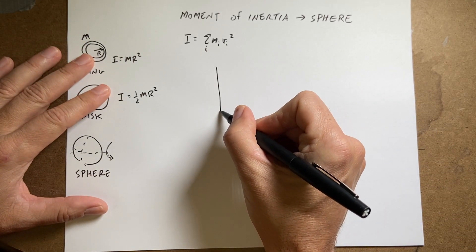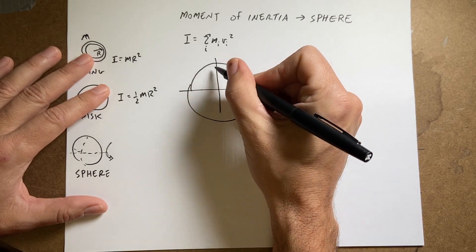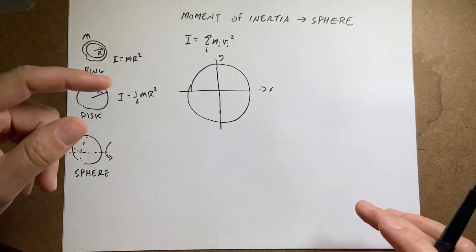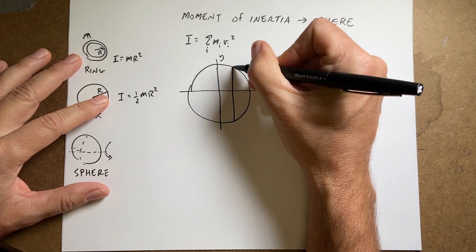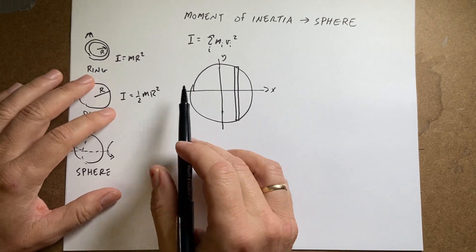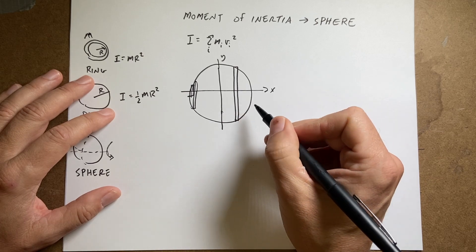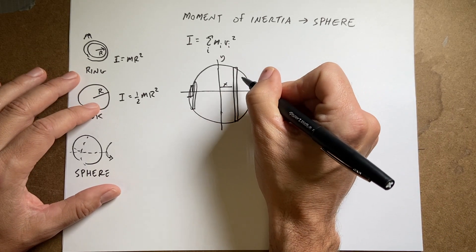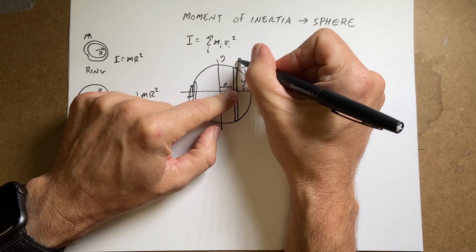Here is my sphere. This is the x-axis, and this is the y-axis, and I'm rotating the sphere about this axis. I'm going to break it into disks. Here's one of the disks. The sphere has radius r and mass m. A disk at position x has a radius of y — that's the height from the center out — and a thickness of dx.